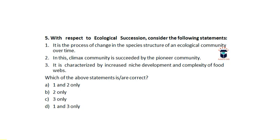Ecological succession is the process of changing the species structure of an ecological community over time — so statement one is correct. Statement two says the climax community is succeeded by pioneer communities — but this is actually wrong. It should be the pioneer community that is succeeded by the climax community, so statement two is incorrectly written. Statement three is also correct. Therefore, the answer is D — statements one and three only.